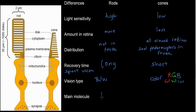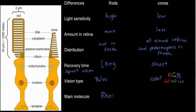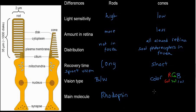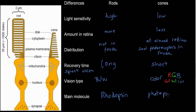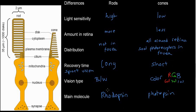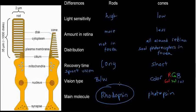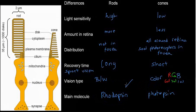The main molecule for rods is rhodopsin, and for cones it's photopsin. Because they both work essentially the same way, you just need to know rhodopsin — all the exam questions pertain to that.